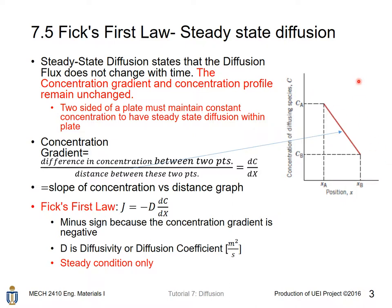And based on the definition here, Fick's first law: J, the diffusion flux, equals negative times a constant D. D is diffusivity or diffusion coefficient, which is dependent on temperature, times dc/dx. dc/dx is the concentration gradient or the slope of concentration versus distance graph.